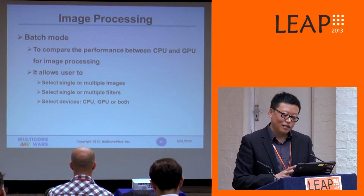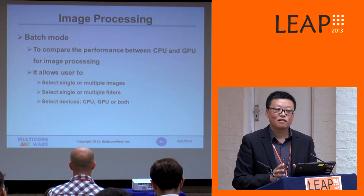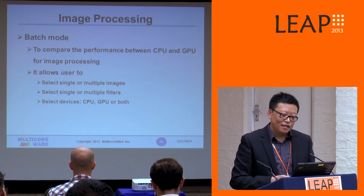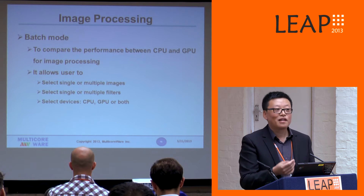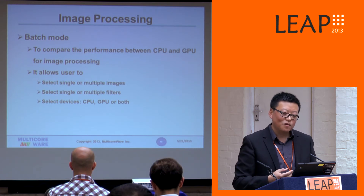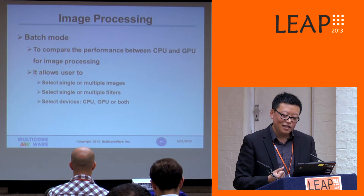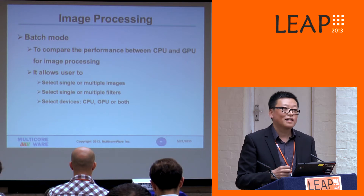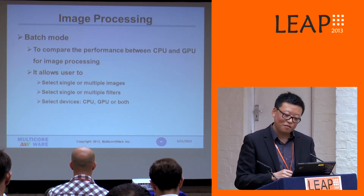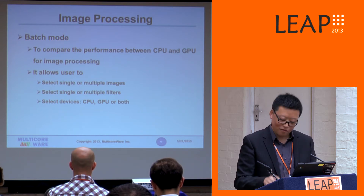Within this APK we have supported different modes to give a better user experience. One mode is called batch mode. If you try our demo right outside this conference, you can see it in action. In batch mode, you can compare the performance between running these filters on CPU versus GPU. You can select single or multiple pictures, single or multiple filters, and choose the device to try: CPU, GPU, or both.